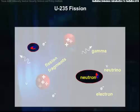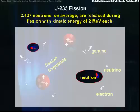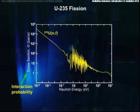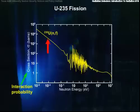Let's look very carefully at these fission neutrons, because it is they who keep things going in the chain reaction. During fission, on average, 2.427 neutrons are released, with a kinetic energy of about 2 MeV each. If we look at the probability of these neutrons interacting with uranium to cause another fission, we see that the cross section, or probability, is very low for high energy neutrons, and increases dramatically for low energy neutrons.